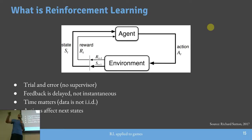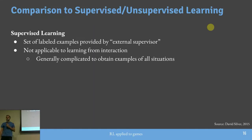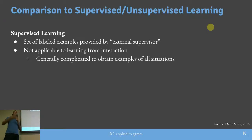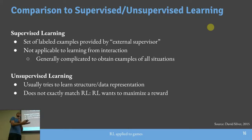Os problemas de Reinforcement Learning têm desafios temporais: uma ação tomada agora pode ter influência em ações no futuro. Isso não ocorre no aprendizado de máquina tradicional. Comparando com aprendizado supervisionado, onde eu tenho dados rotulados e treino um modelo para classificar — no RL, gerar um dataset com todas as possibilidades seria completamente complicado. Aplicar aprendizado supervisionado ao problema de RL, na maior parte das vezes, não é factível. O RL está tentando maximizar o reward, não descobrir estruturas nos dados.